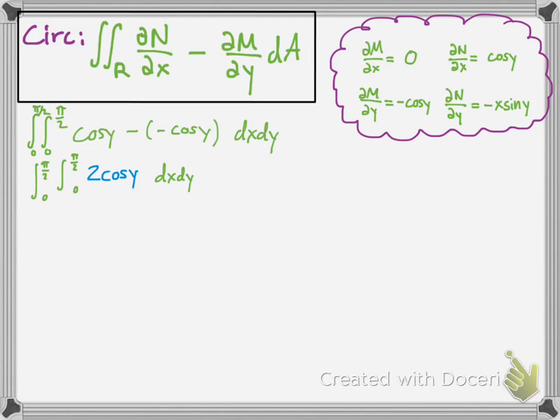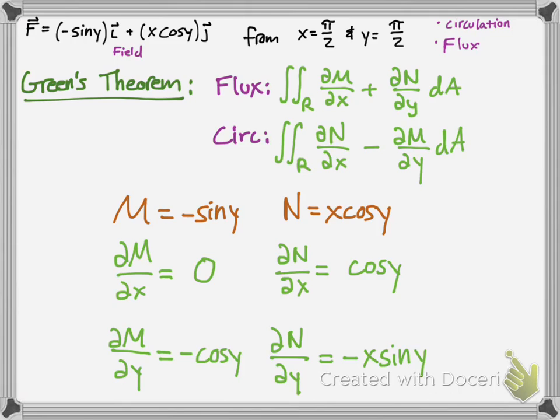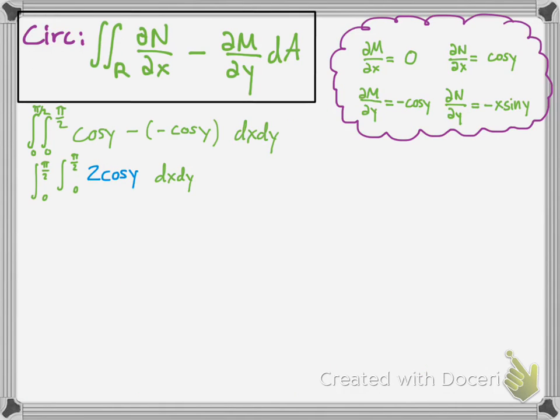We can simplify that to 2 cosine y, and the bounds we're given from x equals pi over 2 to y equals pi over 2. So, it's going to be from 0 to pi over 2, y pi over 2, 0 to pi over 2, 0 to pi over 2 again. And, you can define your variables as dy, dx, or dx, dy. I specifically did dx, dy, because you can see that the integration will be easier. You can do either way in this case.